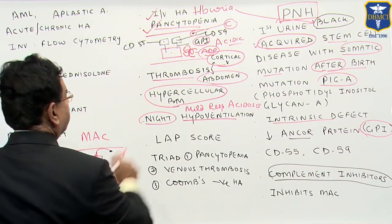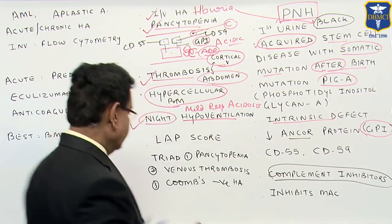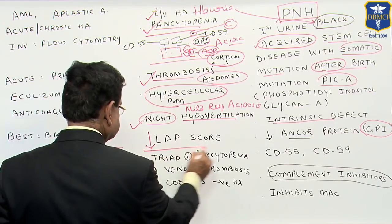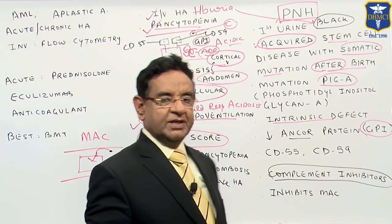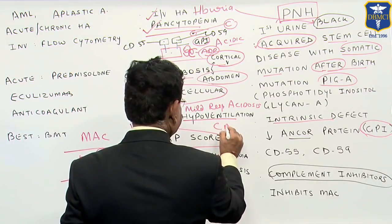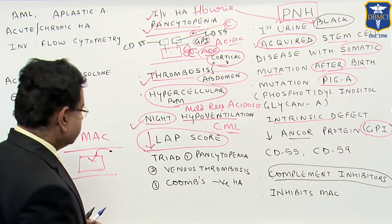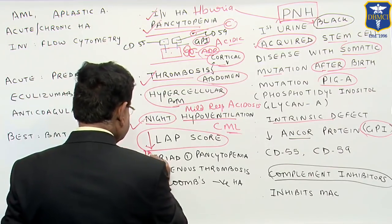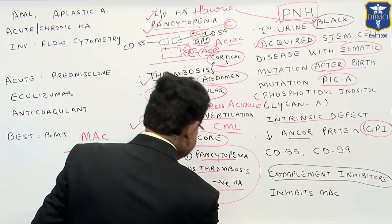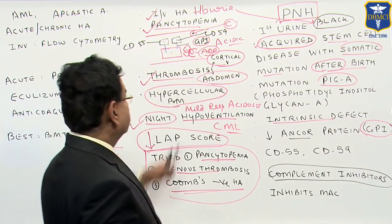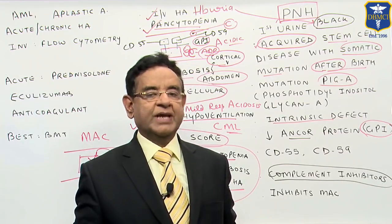What happens to the LAP score? LAP score is reduced. This is a very important point. Another condition where LAP score is reduced is chronic myeloid leukemia. Now, the triad of PNH is: pancytopenia, venous thrombosis, and Coombs-negative hemolytic anemia. There are no autoantibodies involved, so it is a Coombs-negative hemolytic anemia.